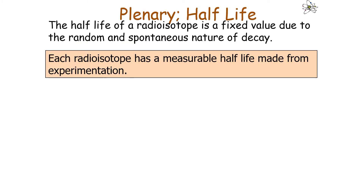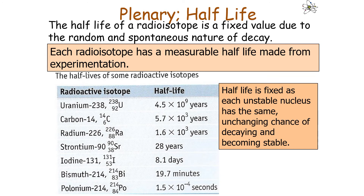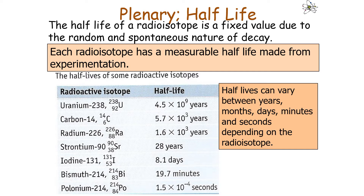The half-life of a radioisotope is a fixed value due to the random and spontaneous nature of the decay. Each radioisotope has a measurable half-life determined from experimentation. As a result, half-life is fixed because each unstable nucleus has the same unchanging chance of decaying and becoming stable. The half-lives for different isotopes can vary between years, months, days and minutes depending on that radioisotope.